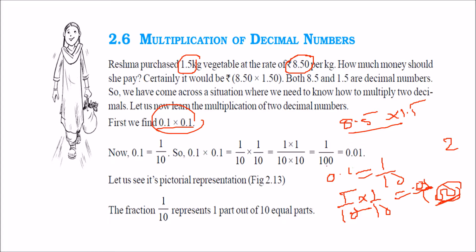There is another method. 0.1 into 0.1 — what does this become? Just 1. You just forget about these decimals. 1 into 1 is 1. Then put the decimal value because there are two values after decimal. So you have to place: 0, 0 — giving 0.01.